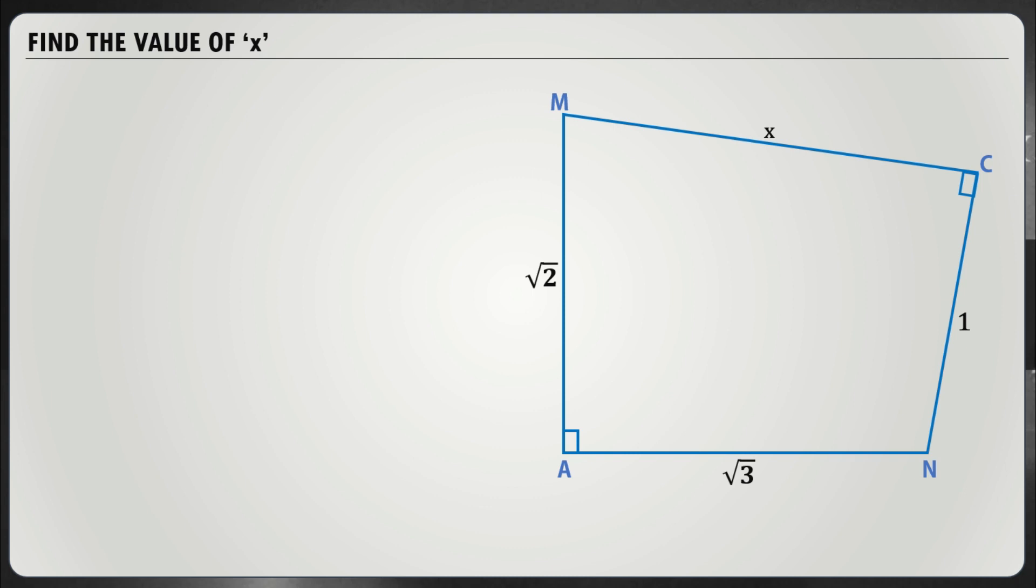Looking at this quadrilateral, we have 90-degree angles here and here. However, if I draw a line, a diagonal across MN, that would be the hypotenuse of two triangles.